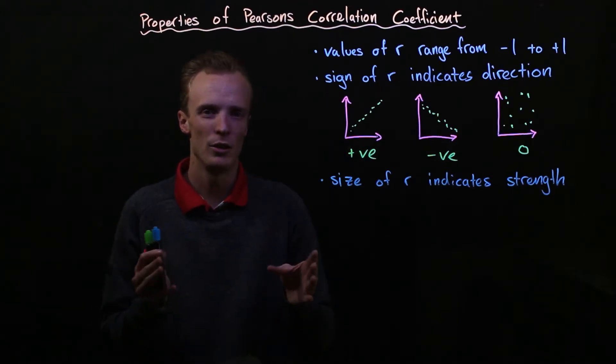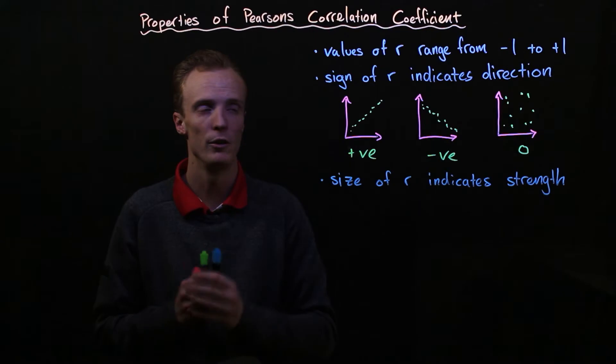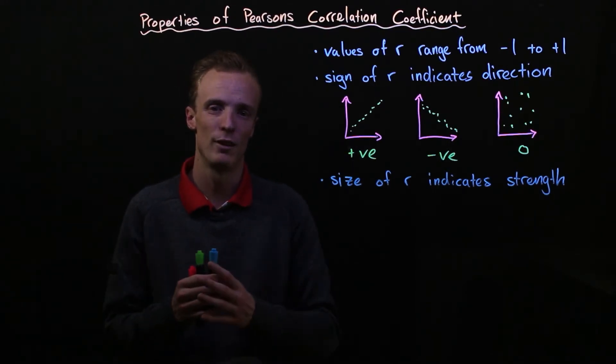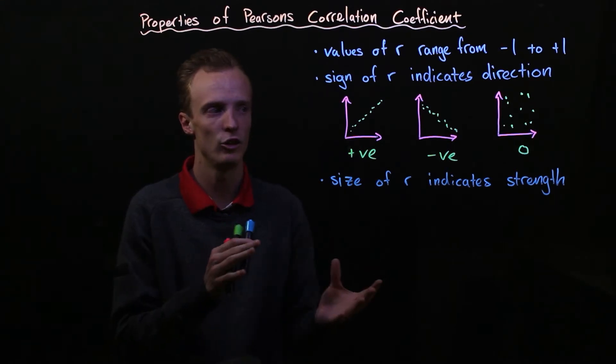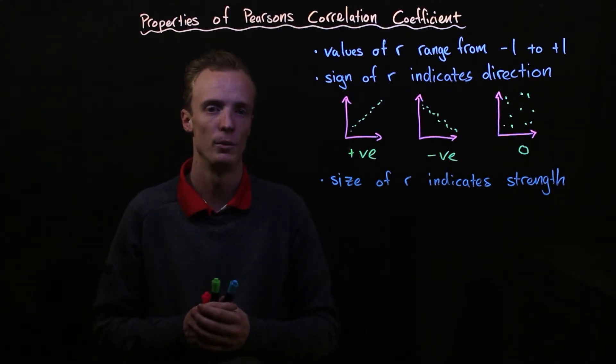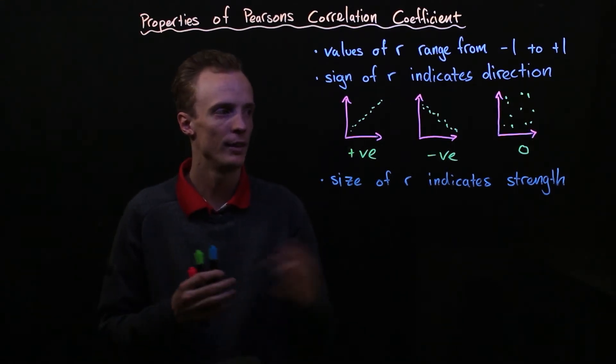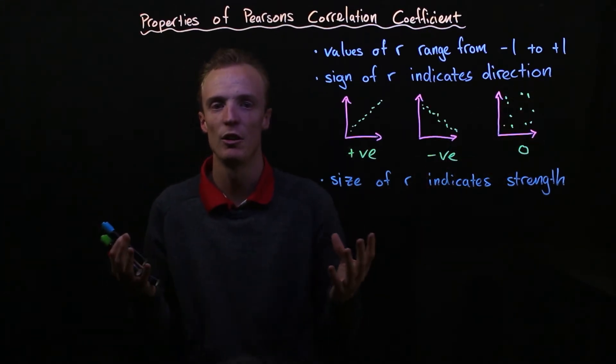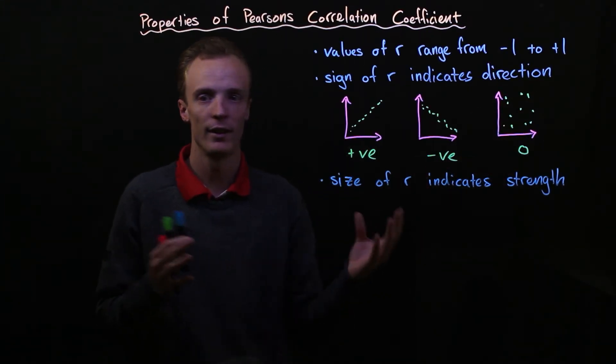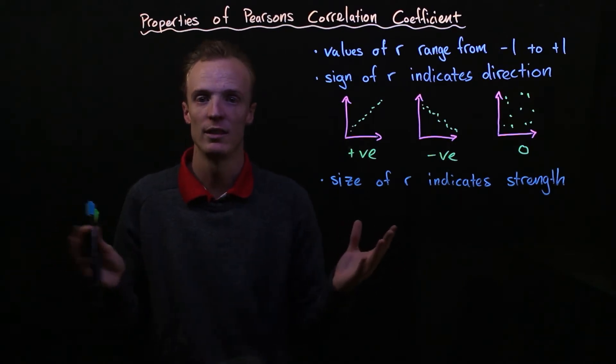Now the closer that you move to zero or the further away that you move from negative one and positive one, the less strength there is in the correlation between the two variables at play. Remembering that zero indicates that there is no correlation. So the strength here, it just doesn't exist.